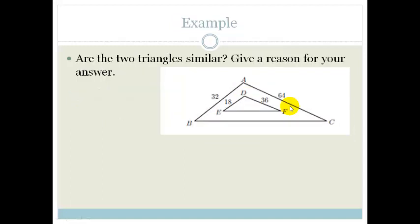Right, what else do we know? Well, let's just check if these two triangles are similar. So if I look at this side here, this side is 18 over 32. If I divide both of those by 2, I get 9 over 16.